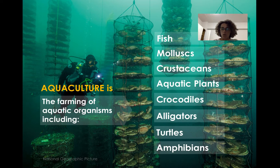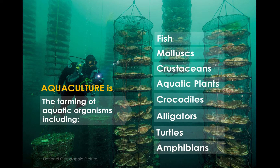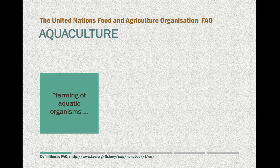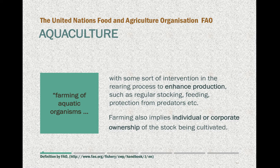One thing to note is that aquatic plants includes seaweeds and micro-algae. But aquaculture is farming of aquatic organisms in a specific way — there is a bit more detail to this. It's actually the farming of these organisms with some sort of intervention in the rearing process to enhance production.